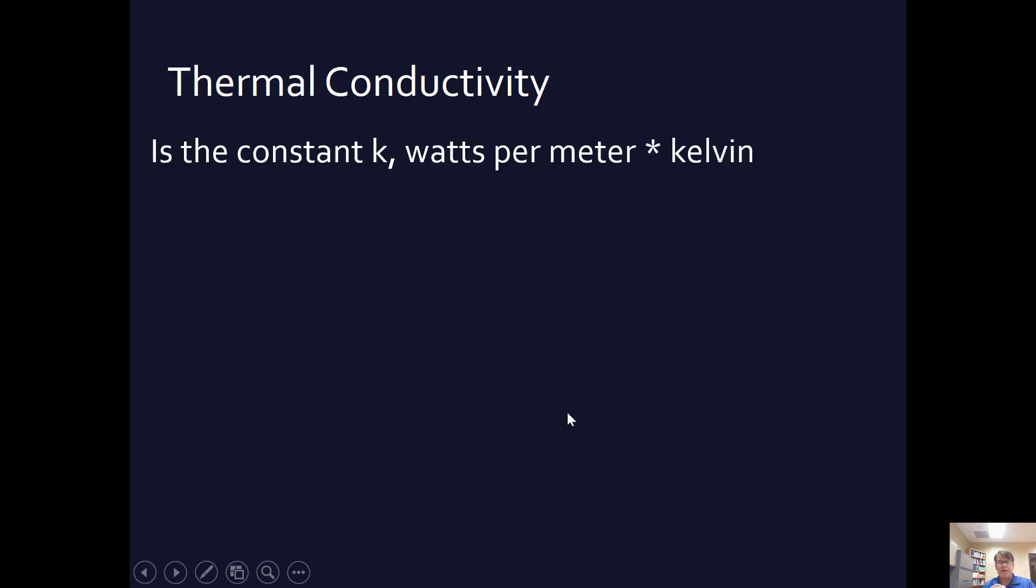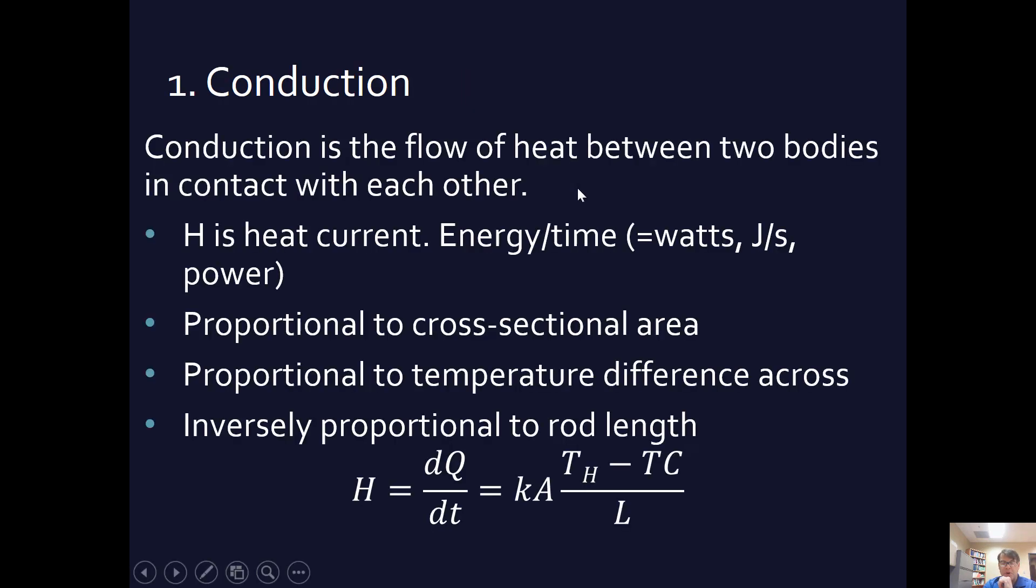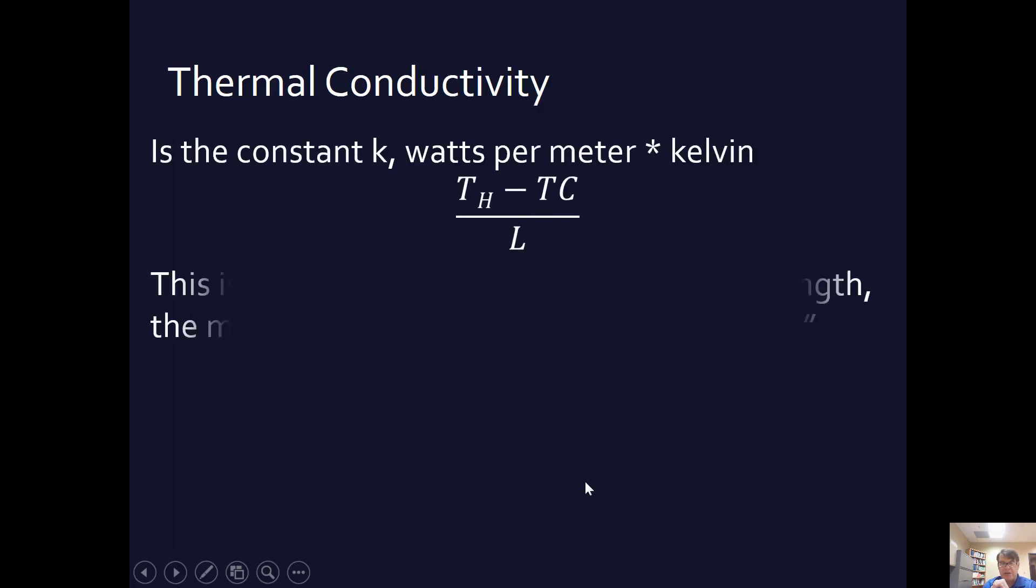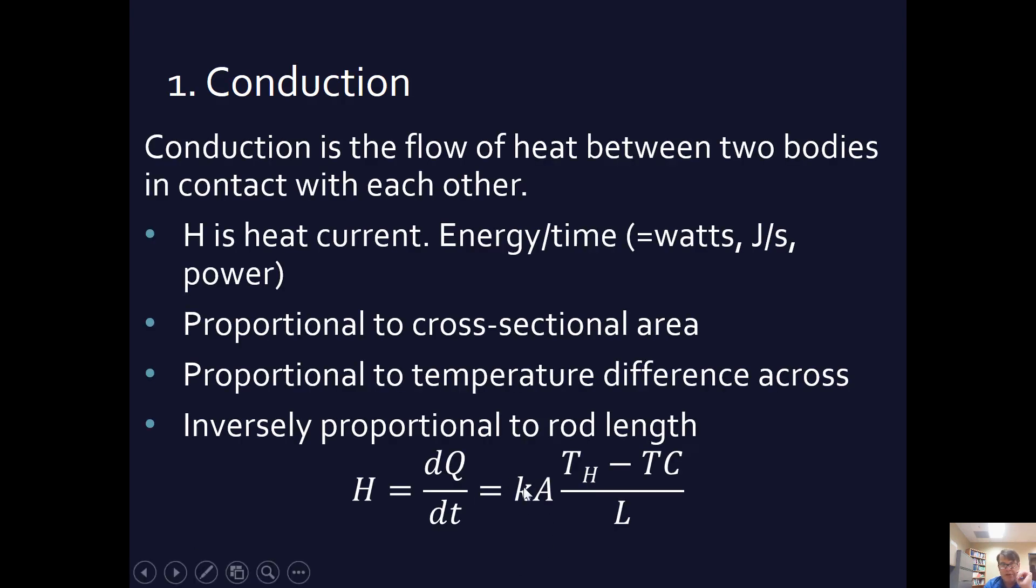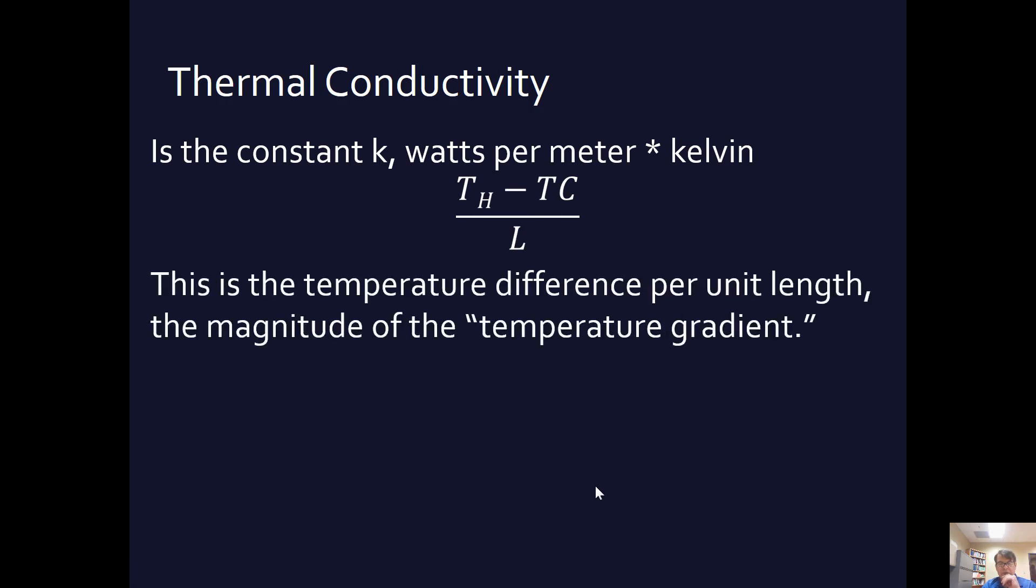And so there we have a nice little formula. Again, k is a constant of thermal conductivity, and it's going to be particular to the different kind of material that you're actually talking about. And its units are watts per meter times kelvin. So this part of the equation right here, this side, is called the temperature gradient. It is the difference in temperature per unit length. So we've given names to the different parts of the equation. We've called this the constant of thermal conductivity, and we've called this the temperature gradient.